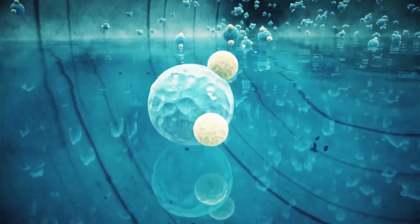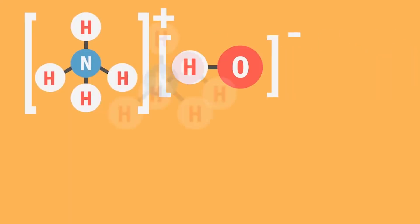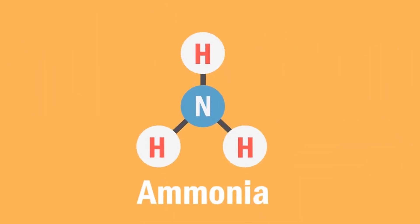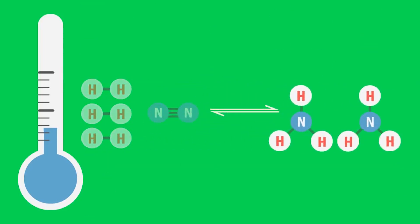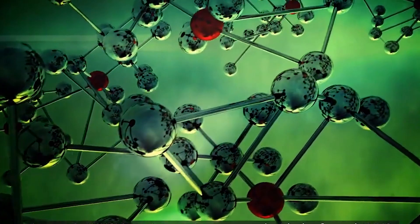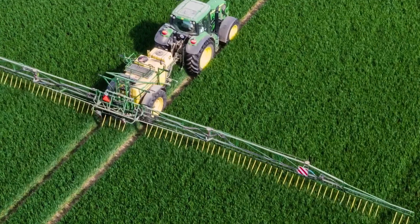We can't just overlook the production process of ammonia itself. Traditionally, the energy-intensive Haber-Bosch process has been the primary method for ammonia production. However, the quest for sustainability has led to the development of more energy-efficient and environmentally-friendly alternatives. By embracing green ammonia production techniques and streamlining the production processes, we can significantly improve the overall environmental impact of ammonia-powered engines.